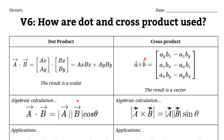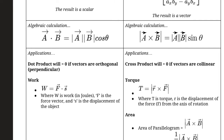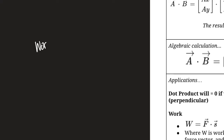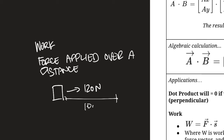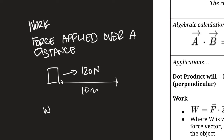Those two relationships are useful, and one of the main ways we use them is in physics. If you've taken a physics class, you probably know what work is and have some idea of what torque is. In physics class, work is defined as a force applied over a distance: work equals force times the change in displacement.